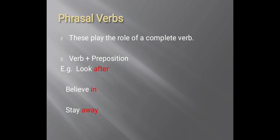The next type is verb phrases, also called phrasal verbs. These play the role of a complete verb in the sentence. The form is a verb followed by a preposition. For example, 'look after' — 'look' is the verb and 'after' is the preposition. Similarly, 'believe in' — 'believe' is the verb and 'in' is the preposition. Together they carry one single meaning, so we call them phrasal verbs.